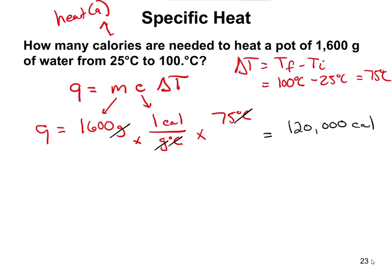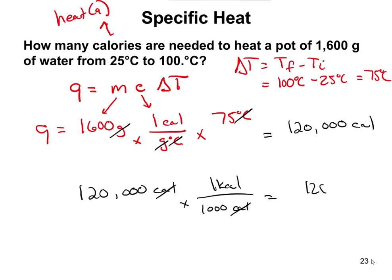That's a really large number, so we could convert it to kilocalories. Using 1,000 calories per 1 kilocalorie, the calories cancel, and 120,000 calories is the same as 120 kilocalories. Either form would be appropriate as your final answer.